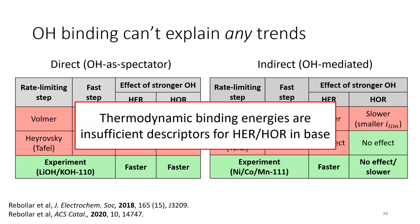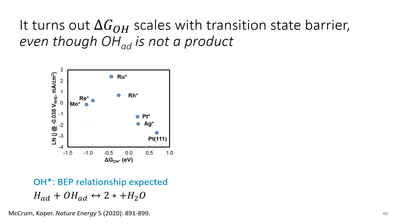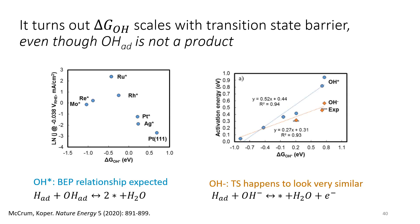So it's not only about adsorption, it has to also be about kinetics, about the solution, about everything else besides just the strength of adsorption on the surface. Now in this particular case of OH, we actually have the answer. Somebody else figured it out. It turns out that delta G-OH does scale with the transition state barrier even though OH is not a product or a reactant. You expect a BEP relationship for this indirect pathway, where OH is actively participating. But it turns out that the transition state activation energy also scales with a direct pathway, where OH is just a spectator, because the transition state happens to look very similar. So this is also from Koper's group. So we can understand why OH matters, but it turns out that it's all kinetics. It's not a BEP relationship that you'd normally see.